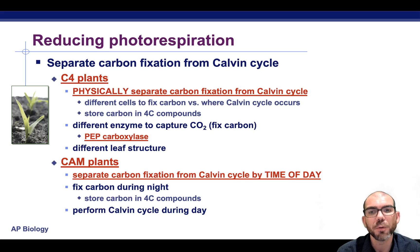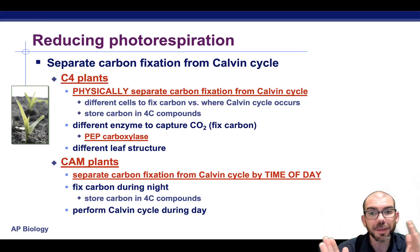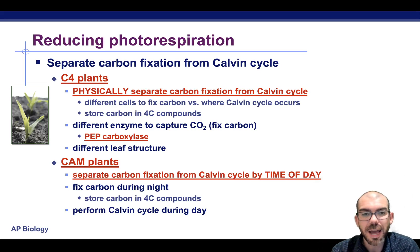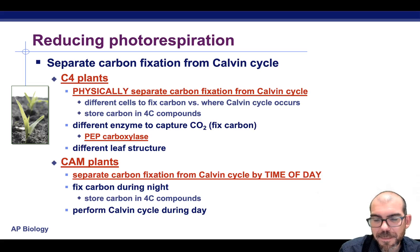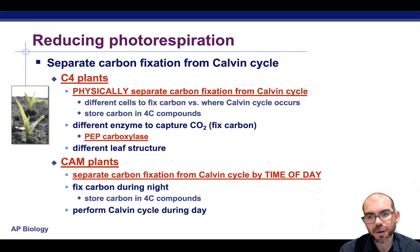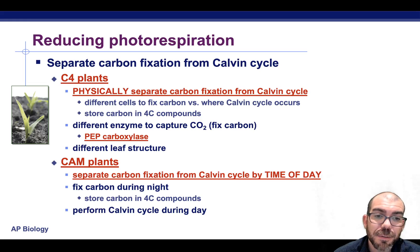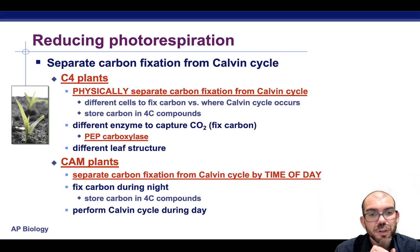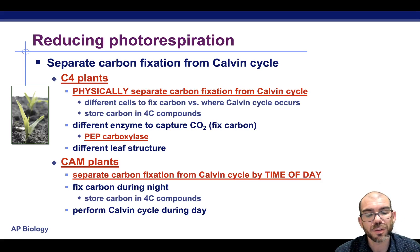There are a couple of different ways plants have adapted to this. One way is C4 plants, where plants physically separate where carbon fixation happens from the Calvin cycle. This enables them to use different compounds other than rubisco to capture CO2 and make sure only CO2 reaches the Calvin cycle. The other evolutionary adaptation is CAM plants, which separate carbon fixation and the Calvin cycle by having them occur at different times of day. At night it's cooler, so plants can open their stomates for gas exchange, but the problem is there's no light at night.